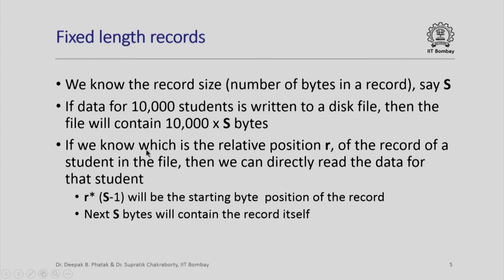More importantly, if we know the relative position of a particular record which we want to access, say position r, then we can directly read the data for that student by simply going to the (r × s − 1)th byte, because this will be the starting byte position for that student's record. The next s bytes will contain the record itself. This is the great advantage of using fixed length records in direct access files.